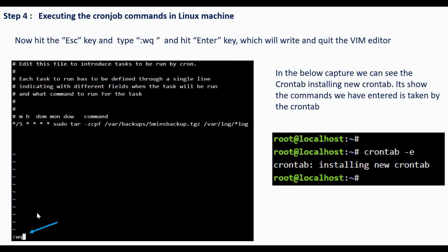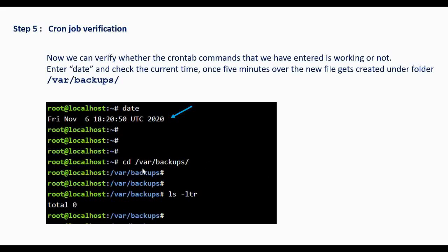Then give ':wq' to write and exit. After that you can see a message saying it is installing the new crontab. At the moment it is showing total 0, but after 5 minutes — let's say at 18:25 — you will see a backup file getting stored there.